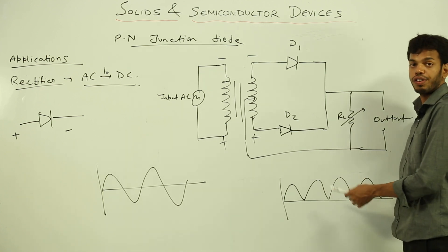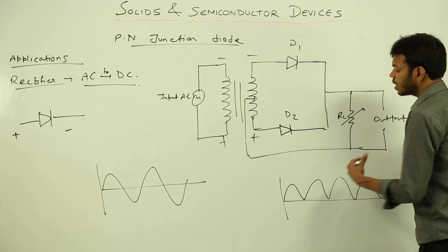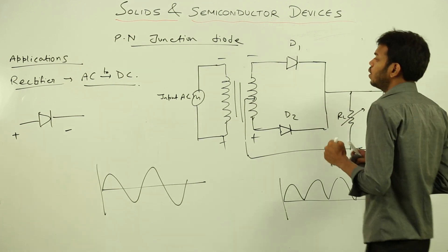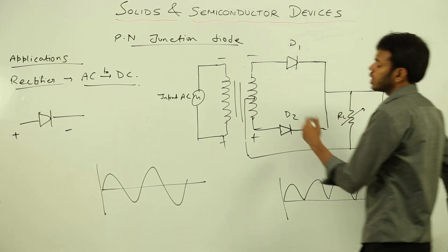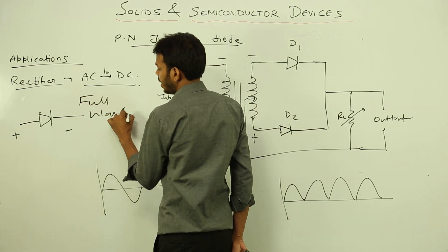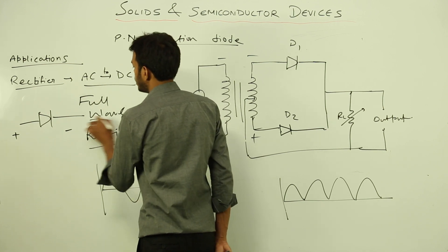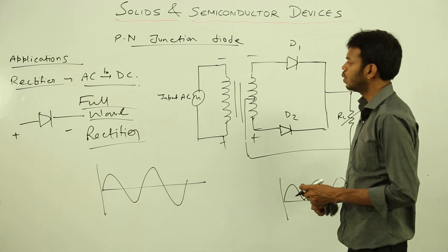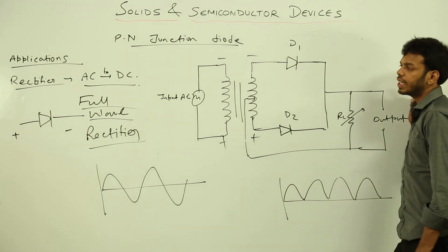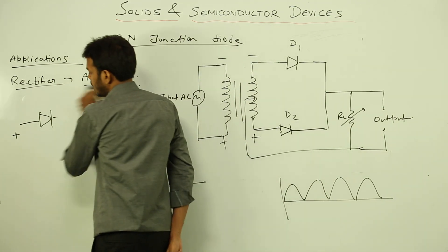If we can filter this signal by passing it through a filter, we will get a constant DC. Right now it is a fluctuating DC, but it is DC. This is the circuit diagram of a full wave rectifier — this is how diodes help us make rectifier circuits. These are the applications of the diode.